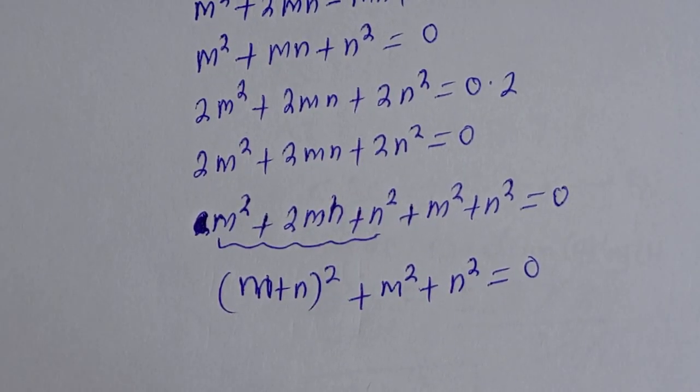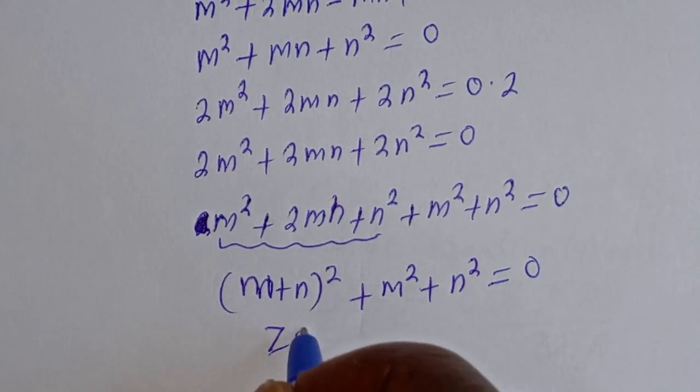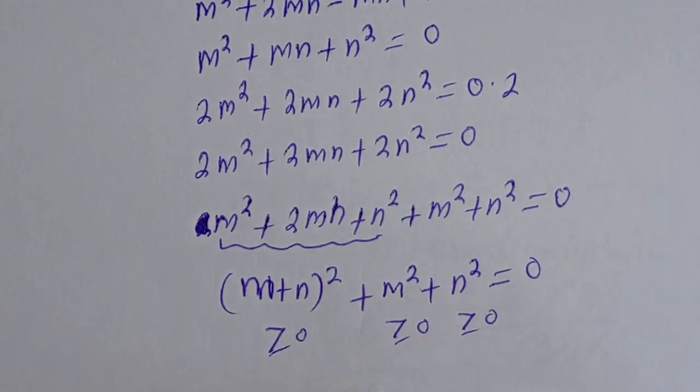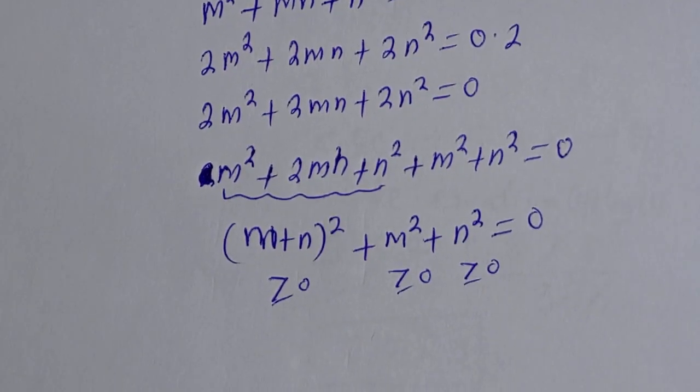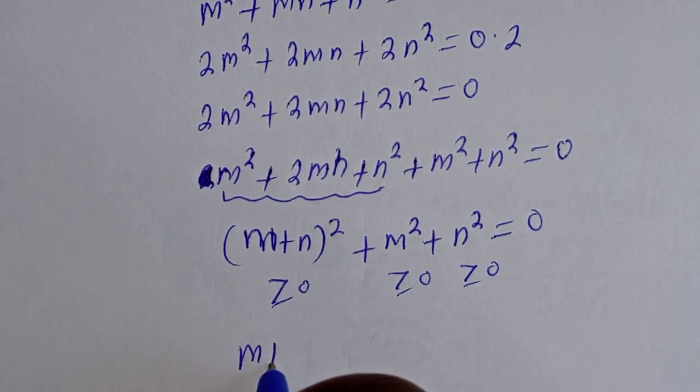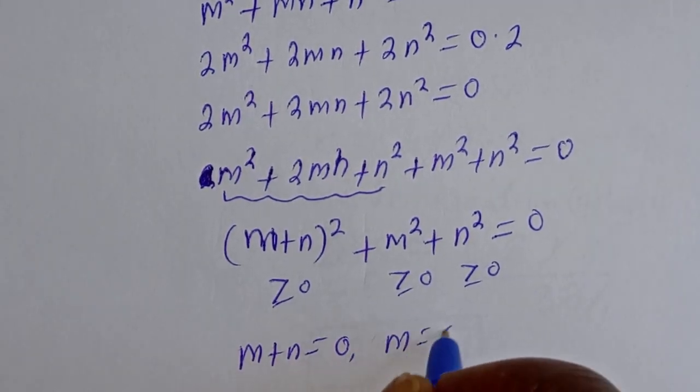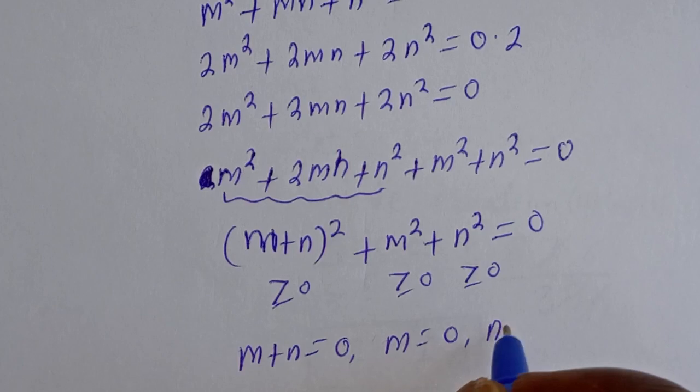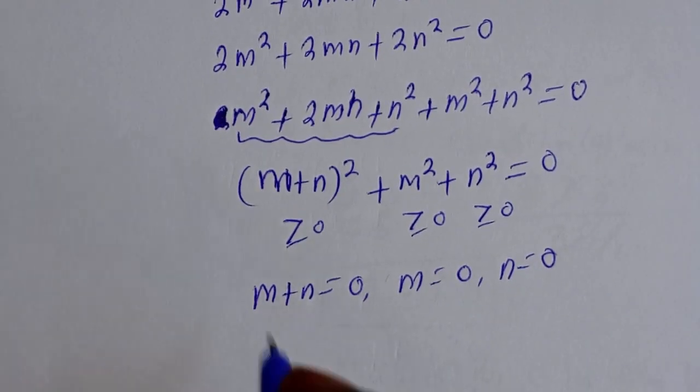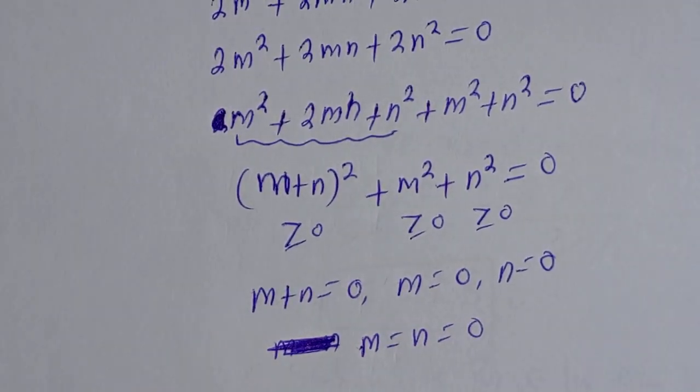Now when you look at this, these are non-negative. So this is greater than or equal to 0, this is greater than or equal to 0, and this must be greater than or equal to 0. Therefore m plus n is equal to 0, m equal to 0, and n is equal to 0. Then from here, m is equal to n which is equal to 0.